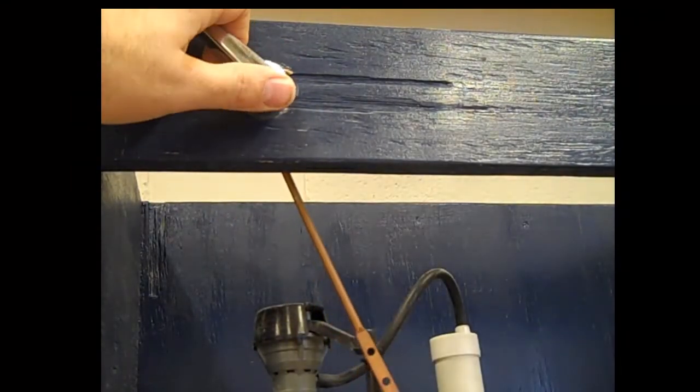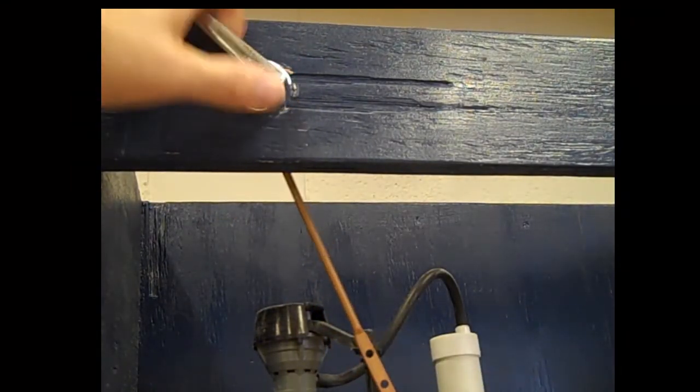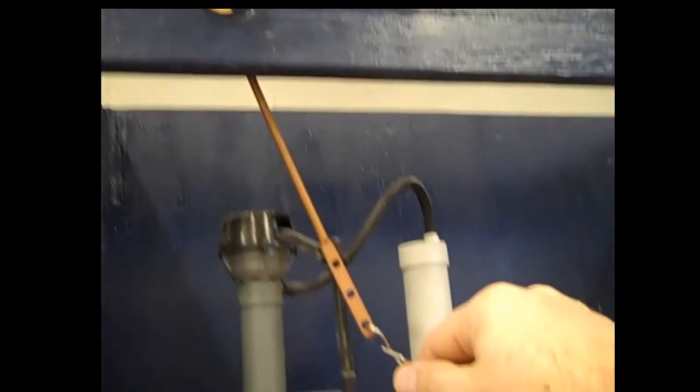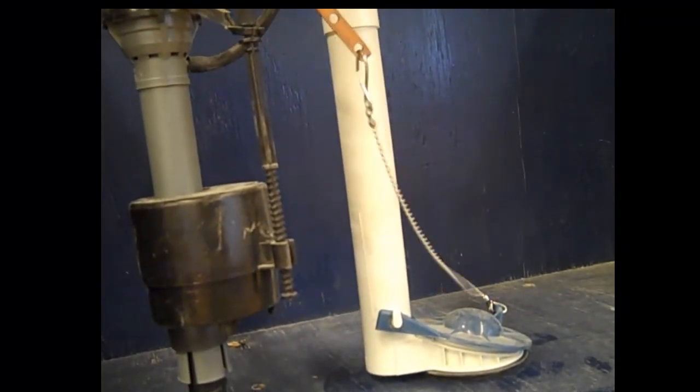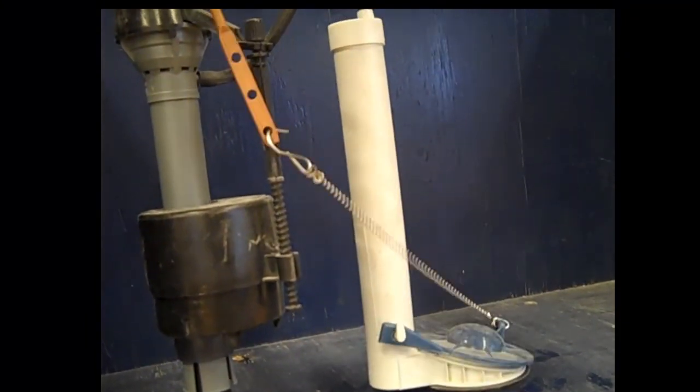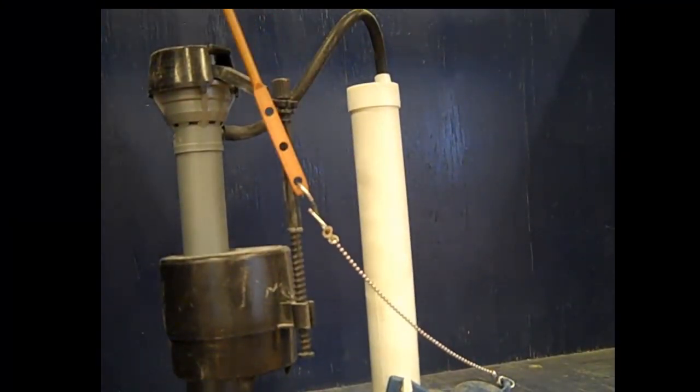And the last step is to connect the flapper chain down here to here. So when you bring this up, the flapper comes up. Once you get that all done, bring it over and have us look at it and we'll inspect it and check you off.